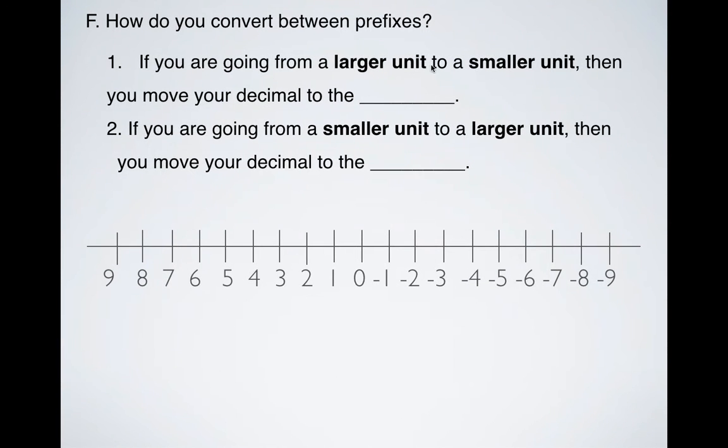So as a review, how do you convert between these prefixes? If you're going from a larger unit to a smaller unit, then you're moving your decimal place to the right. So again, if you're going from a larger unit, like one of those kilo things, to something smaller, like deci, centi, even the base unit, that means you move your decimal place to the right when you're converting. If, on the other hand, you start with something smaller, like nano or micro, and you're moving to something larger, like centi or deci or kilo, then that means you move your decimal to the left.